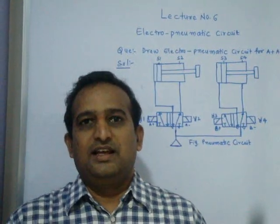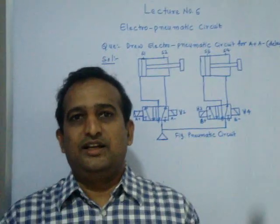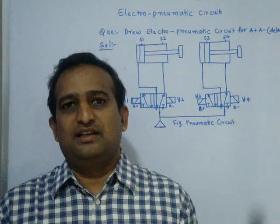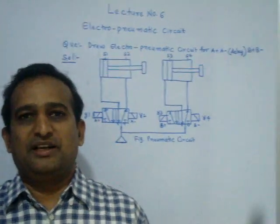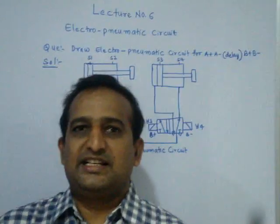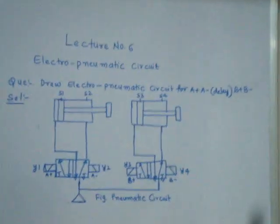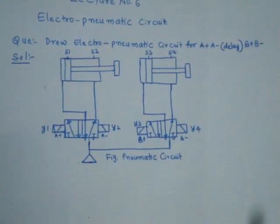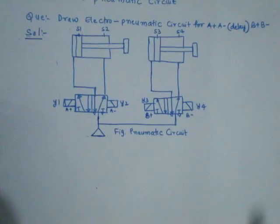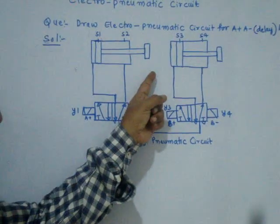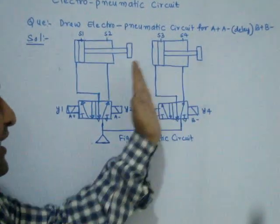Hello, this is lecture number 6 on Electro Pneumatic Circuits, and in total it is the 18th lecture for Mechatronics. The question is typical — it seems simple but is very tricky. You are required to draw an Electro Pneumatic Circuit for A plus, A minus, delay, B plus, B minus. The first cylinder has to go and come back, and after some delay period the second cylinder has to go and come back.